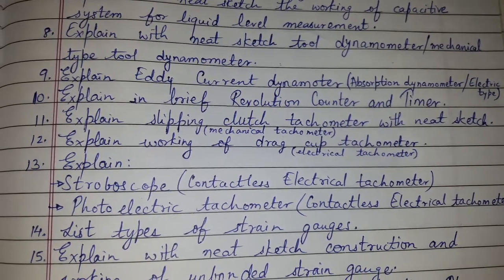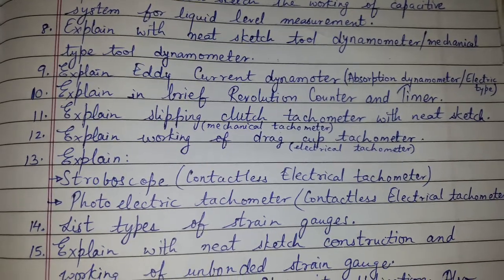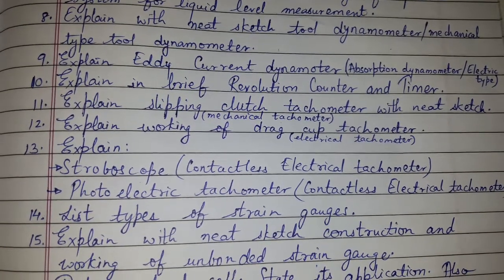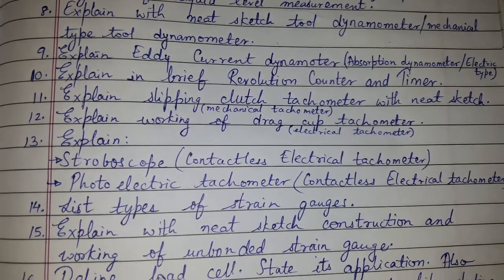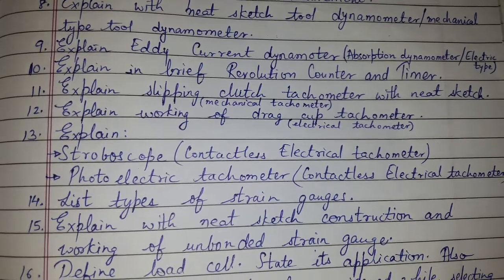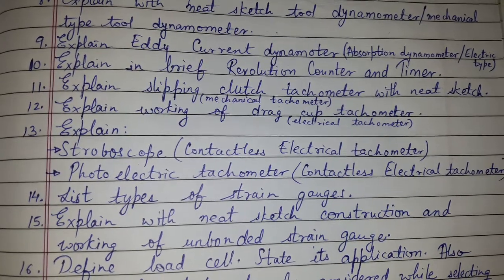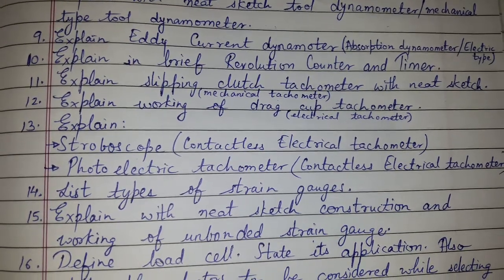Explain in brief revolution counter and timer. Explain slipping clutch tachometer with neat sketch, which is one of the mechanical tachometers.